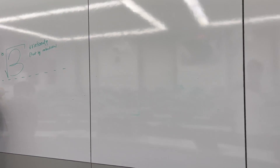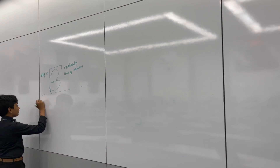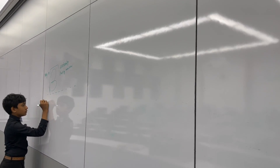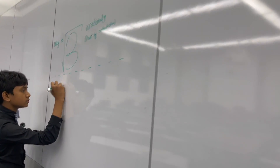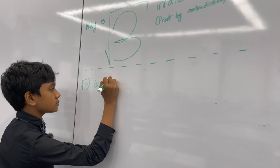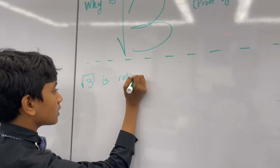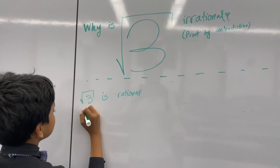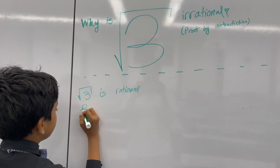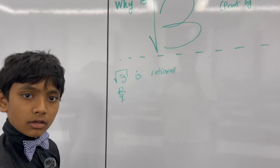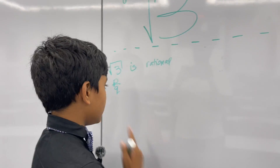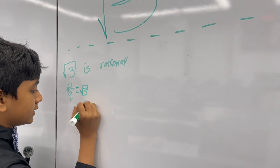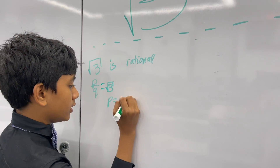So first, let's imagine that root 3 is rational. We assume the opposite — that the lowest terms it can be expressed in is p over q. So p over q is root 3, which means p is equal to q times root 3.